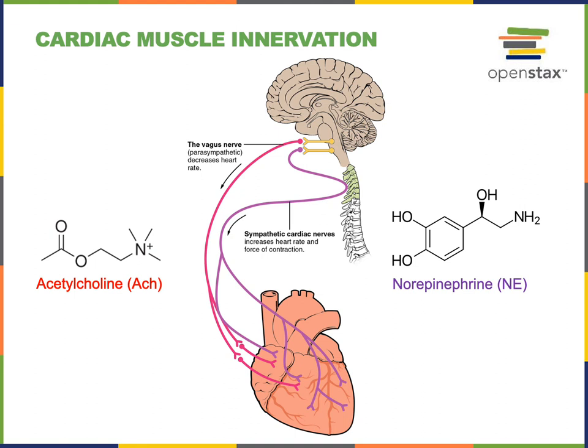Postganglionic sympathetic fibers release the neurotransmitter norepinephrine in the SA node, AV node, and throughout the myocardium of the heart in order to stimulate an increase in heart rate and an increase in the force of contraction.